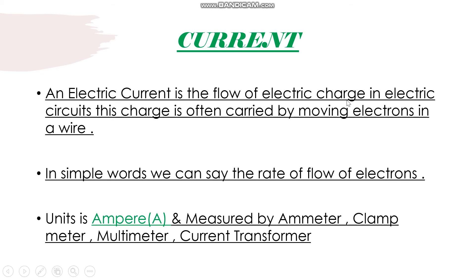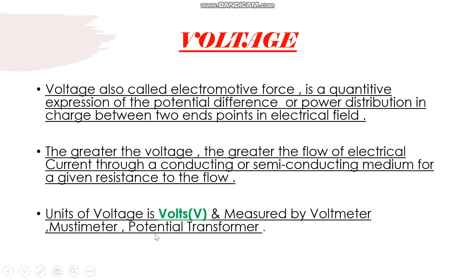Electric current is the flow of electric charge in an electric circuit. This charge is often carried by moving electrons in a wire. So current is nothing but electrons which flow through the electrical circuit when we apply electrical pressure or voltage. In simple words, the rate of flow of electrons is called current. The unit of current is ampere, and it is measured by ammeter, clamp meter, or multimeter. The ammeter is connected in series with the electrical circuit, and the voltmeter is connected in parallel to measure voltage.